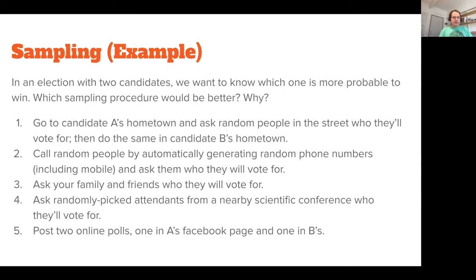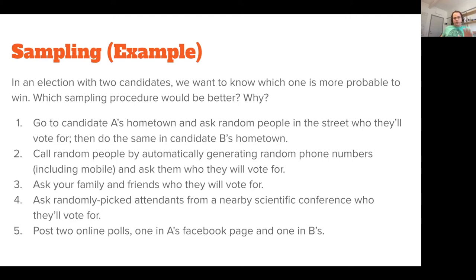A second option: you call random people by automatically generating random phone numbers — including mobile — and ask them who they'll vote for. This is something people actually do, especially in places like the United States where there's no centralized phone registry. You can call random people and automatically generate random phone numbers so there's no bias in which number you generate. That is a very good random sample. You might still have response bias, but it would really be random, so all possible factors would get smoothed out by the randomness of the sample.